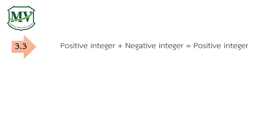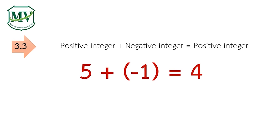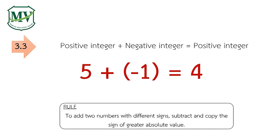Next, positive integer plus negative integer equals positive integer. Your answers may vary. For example, positive 5 plus negative 1 equals positive 4. Remember, to add two numbers with different signs, subtract 5 minus 1 and copy the sign of the greater absolute value, which is positive. That's why the answer is positive 4.